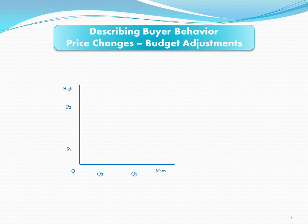Now we're able to categorize not only the two variables in the model — price and quantity — but any other influence as a shift in buyers and a shift in the demand curve. Here I have a simple graph with price on the vertical and quantity on the horizontal. P2 is higher than P1. Q2 is less than Q1, and as we move to the right on the horizontal, that's more quantity. Price is displayed in dollar terms on the vertical, and quantity — the number of units per time — is the flow into and out of markets.